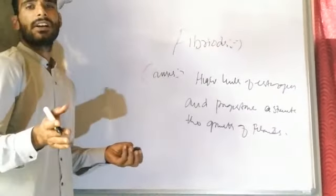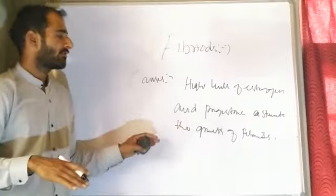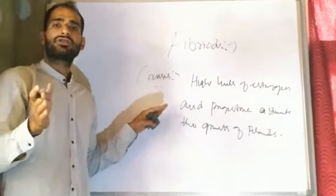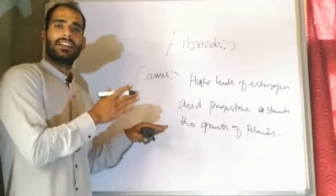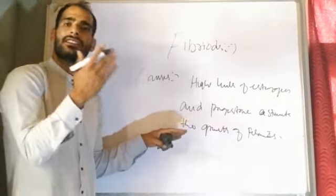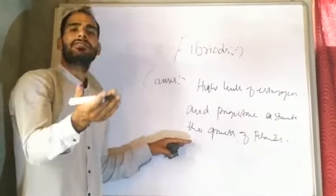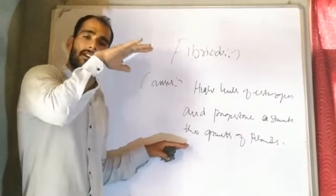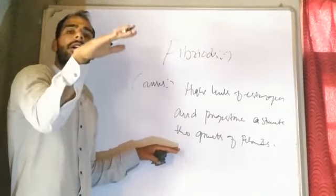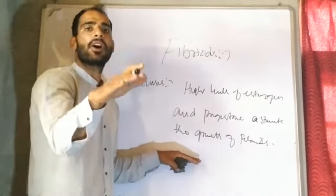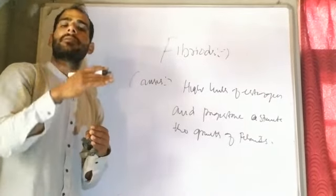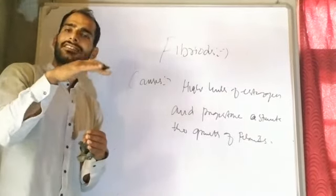The evidence for this is that after menopause, when menopause has occurred in a woman, fibroids tend to shrink. Also, in women who have more children, there are fewer chances that a woman will develop fibroids. So the more children a woman has, the lower the chances of fibroids developing.